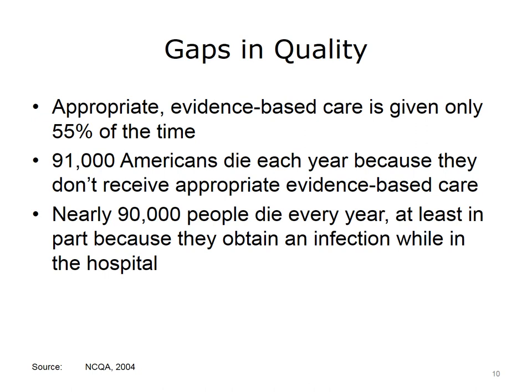These are examples of underuse, misuse, and overuse in our health care system that contribute to poor quality outcomes for patients and their families. According to the NCQA, evidence-based care was given only 55% of the time, and 91,000 Americans died each year because they didn't receive the appropriate evidence-based care. Over 100,000 patients were injured as a result of receiving inappropriate or wrong care. Health care quality outcomes in our industry are not as good as they should be and need substantive improvements.